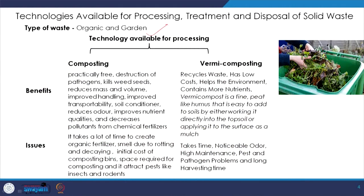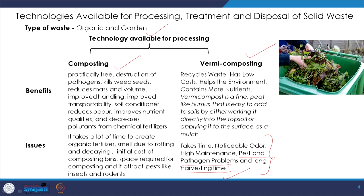For garden waste, we can do composting or vermicomposting. Comparing the two, vermicomposting takes time but less time than composting. There is odor in both cases, and both require very high maintenance because they are organic procedures. There is the problem of pests and pathogens, and both have a long harvesting time, requiring a large land area where the biodegradable waste is staged for treatment. Both face difficulties with pests, insects and rodents because the waste lies there for a long time. Both are low on energy but high on operations since a lot of labor cost is required. Vermicomposting is more compact compared to composting.